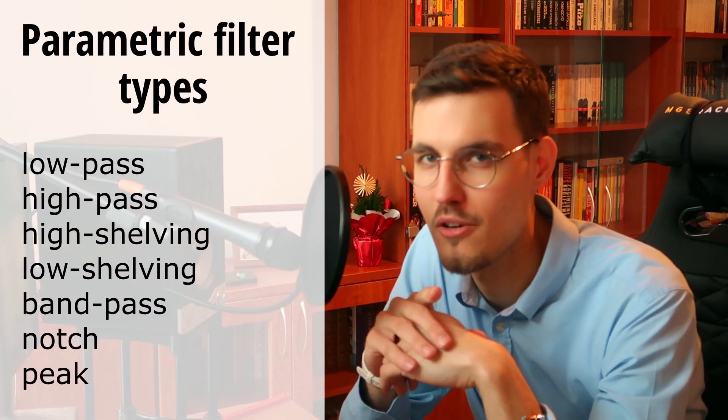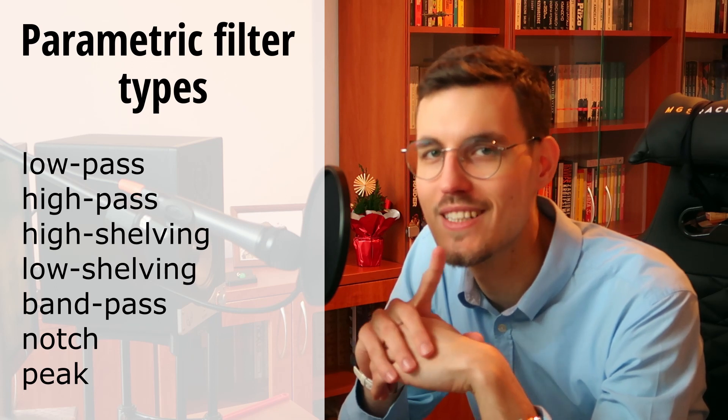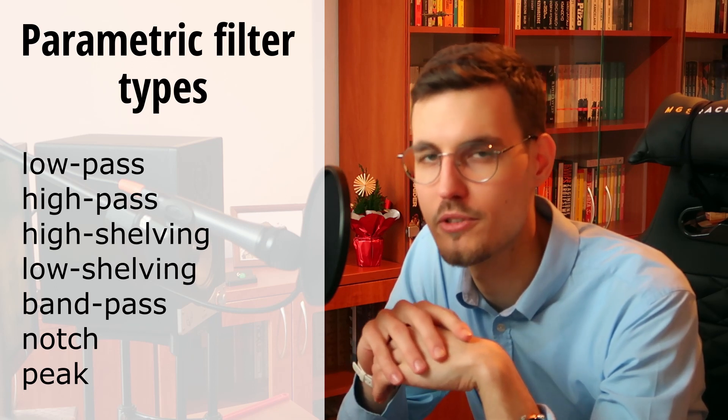In digital signal processing, there are lots of filter types, but in parametric EQs, there are only a few. In this short video, I'll cover all seven types of parametric filters. The effect of each of them will be shown on the example of pink noise filtering. The unfiltered pink noise sounds like this. So let's start with our parametric filter types.